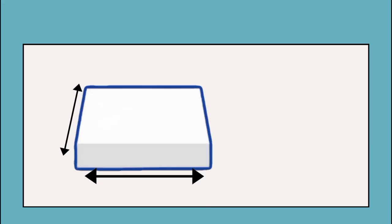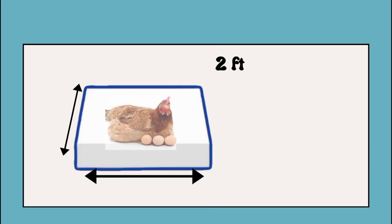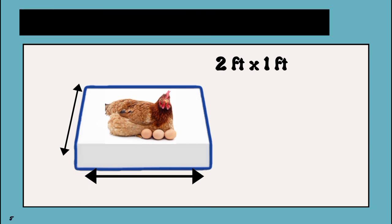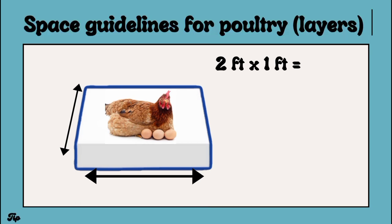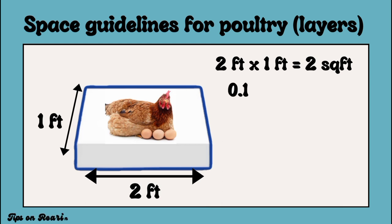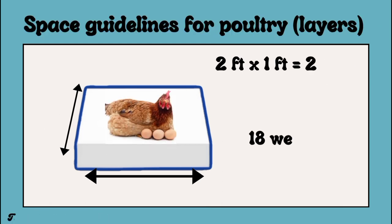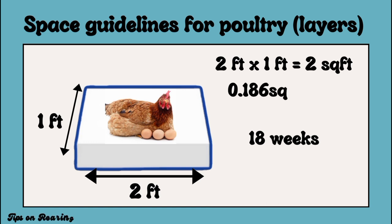When it comes to layer birds, the ideal floor space requirement for a layer is two square feet per bird, or 0.186 square meters per bird, for layers above 18 weeks raised in a deep litter system.